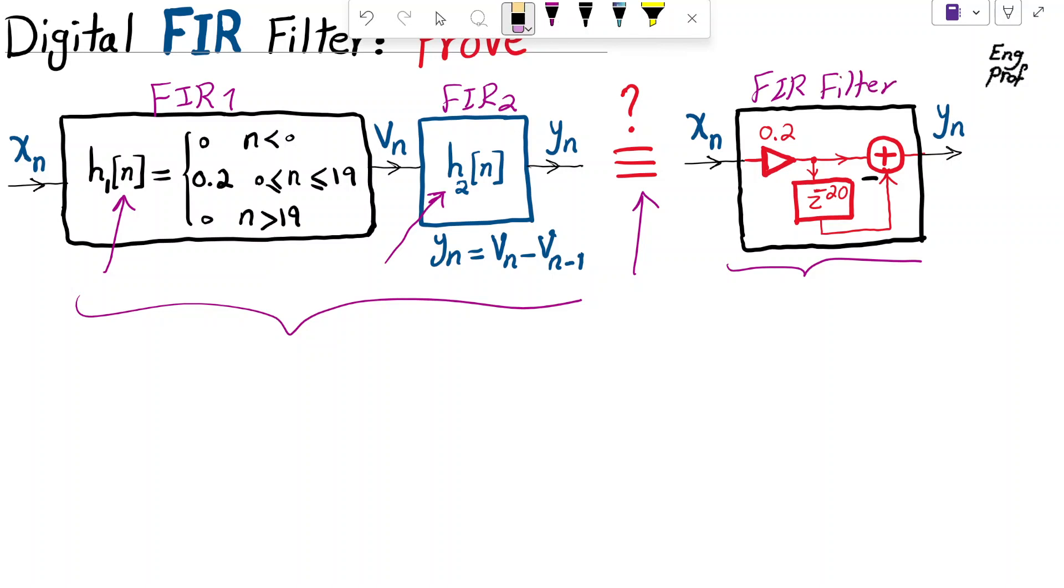Why is that the case? I'm going to show you using two methods. The first method is using Z-transform. By Z-transform, I mean we know that when we have two systems in cascade,